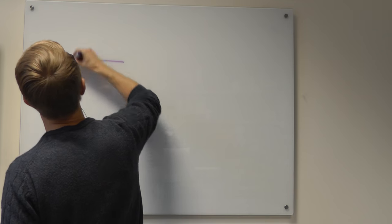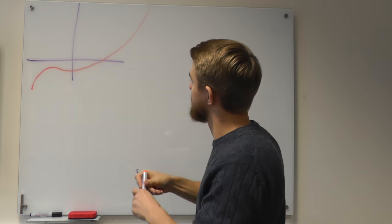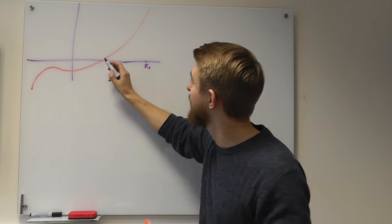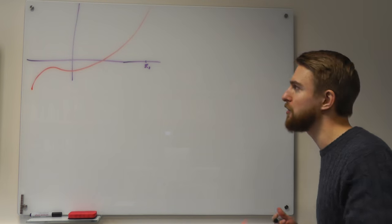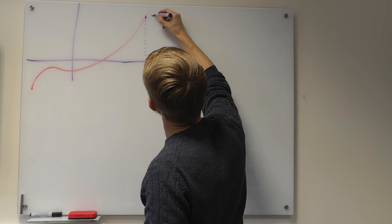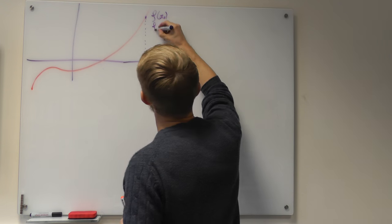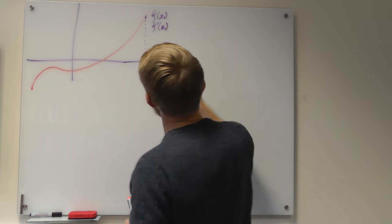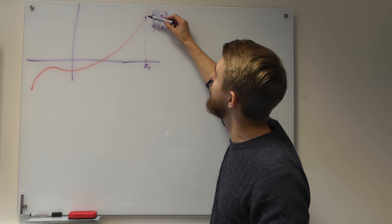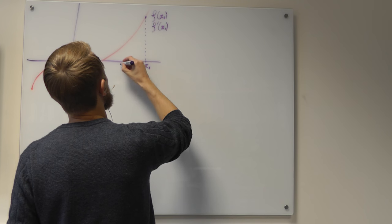If we had a graph containing a function that looks something like this, and we started with an initial guess x₀, but we were looking to find a particular root, what the Newton-Raphson method does is evaluate the function at our point — f of x₀ — and also evaluate the gradient of our function at that point — f prime of x₀. Using those two pieces of information, we construct a tangent line, which is the line that goes through the point but also has the same gradient as the curve at that point. Our tangent line will look something like this.